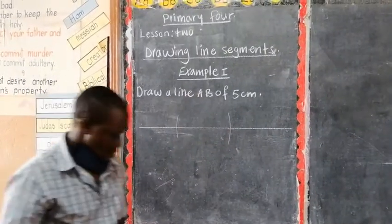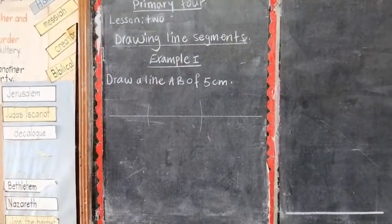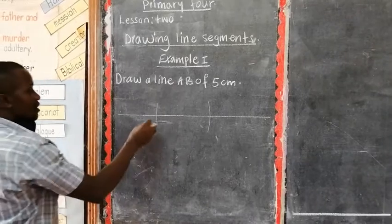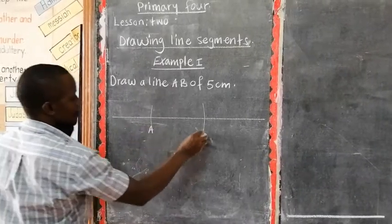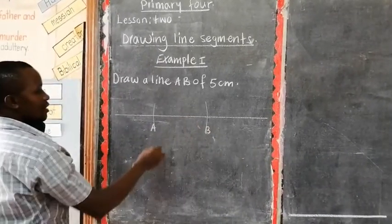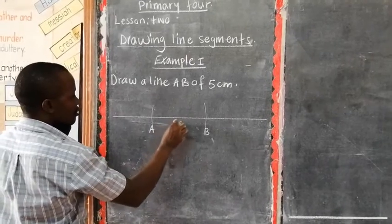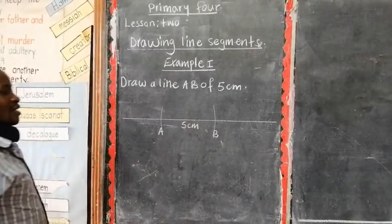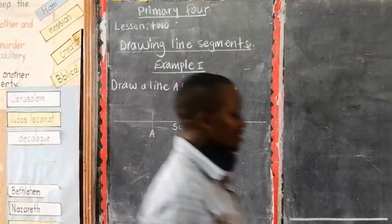Now you remove and write here A, this one is B, then you write here 5 centimeters. So that is how we draw line segments.